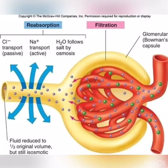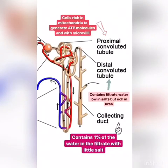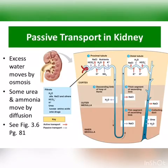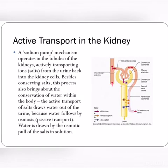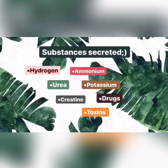In secretion, only 20% of the blood plasma is filtered, hence there are still waste products in the blood plasma in the afferent arteriole. The secretion process, which is by passive diffusion or active transport, helps to remove these substances from the capillaries into the renal tubules, which is the convoluted tubule and collecting duct.